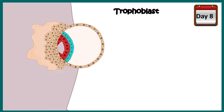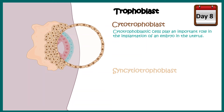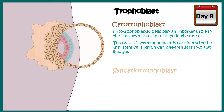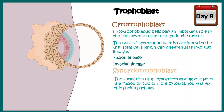At day 8, the trophoblast, which was the outer layer, further differentiates. It now becomes the cytotrophoblast and the syncytiotrophoblast. The cytotrophoblast cells play an important role in embedding the embryo in the uterus. The cytotrophoblast is also considered stem cells — they can diversify into different lineages, like the fusion lineage and the invasive lineage. Importantly, cytotrophoblast cells fuse with each other to form the syncytiotrophoblast.